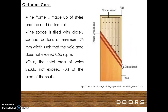Cellular core flush door: the frame is made up of styles and top and bottom rail. The space is filled with closely spaced battens of minimum 25 mm width, such that the void area does not exceed 0.25 square meters. Thus, the total area of the voids should not exceed 40% of the area of the shutter.